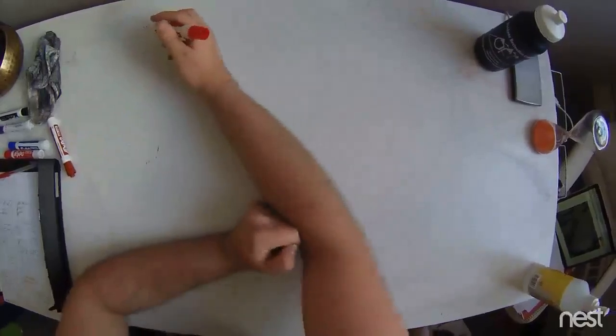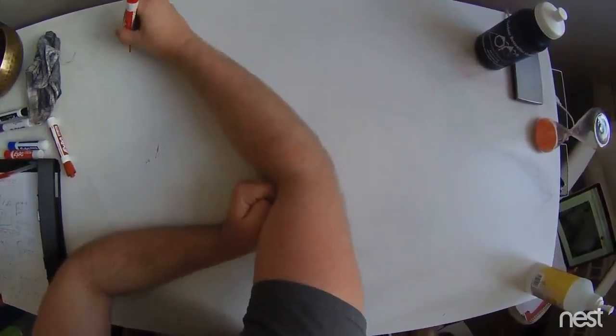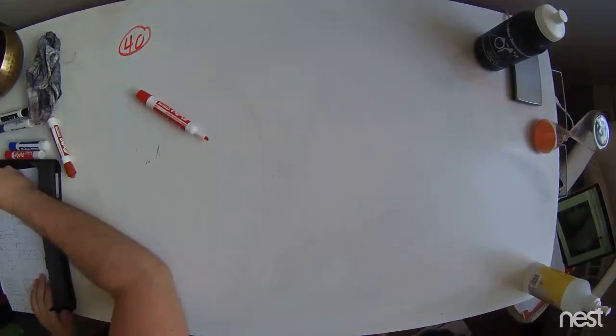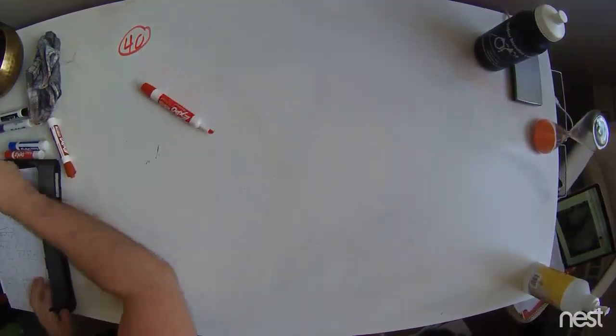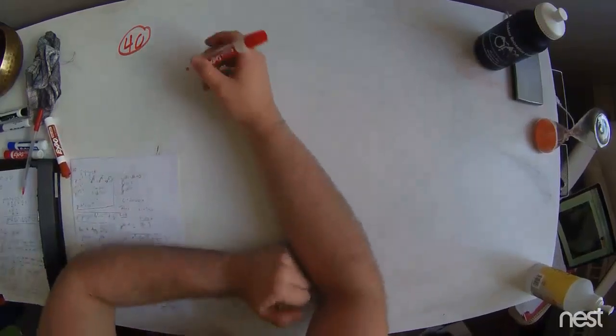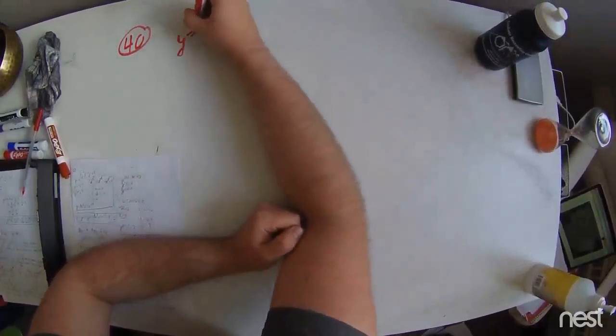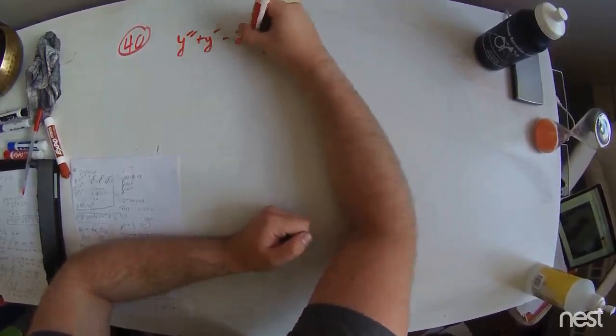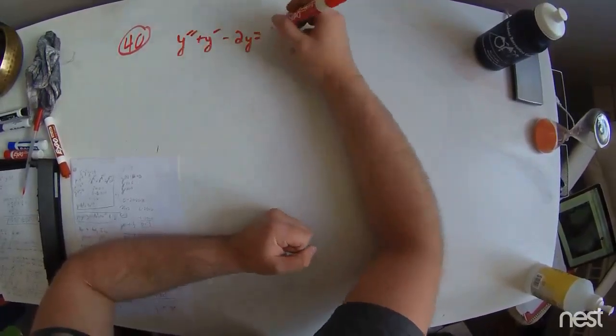Problem 40. In this problem segment, we have the ODE being y double prime plus y prime minus 2y equals 2t.